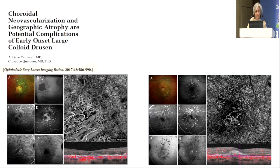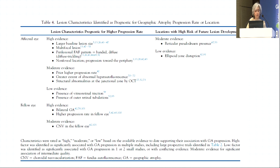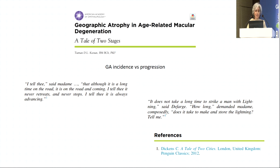Another risk factor is patients with early-onset large drusen — you may see a patient at age 30 with large drusen, which is not AMD, but they can develop geographic atrophy much earlier. The lesion characteristics identified as prognostic for geographic atrophy progression with high evidence include larger baseline lesion size, multifocal lesions, perifoveal autofluorescence patterns, and non-foveal locations. Greater extent of abnormal hyper-autofluorescence is of moderate evidence.